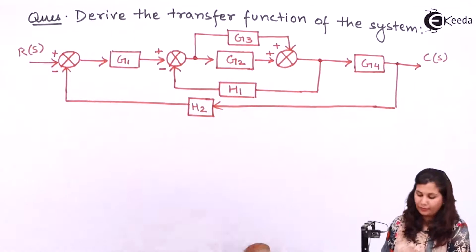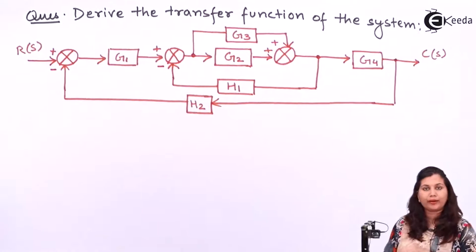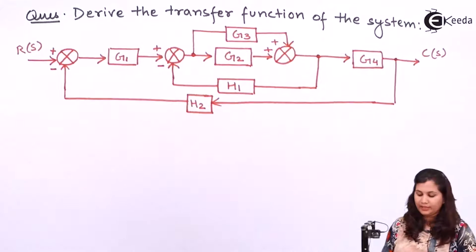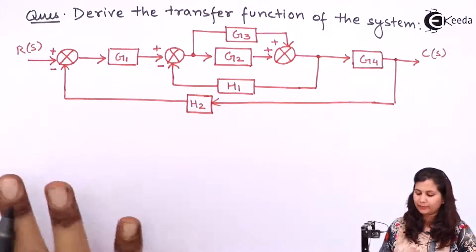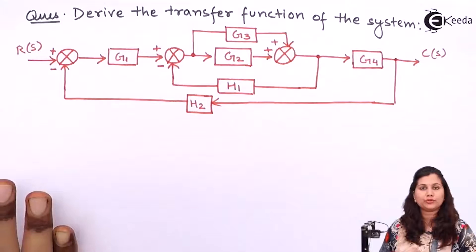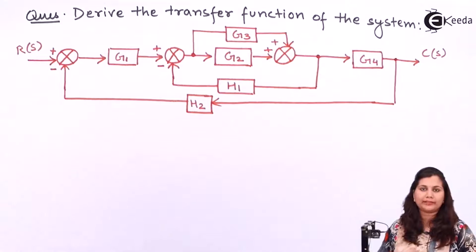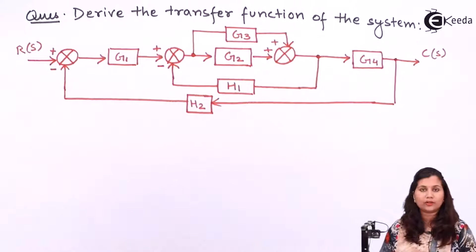So this is our question and we have to find out the transfer function of this system represented by the block diagram, and we have to use the block diagram reduction technique for this. So let's solve this question.